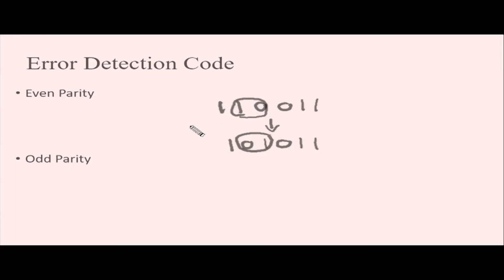This parity is the basic method. To detect two-bit corruption, three bits, or multiple bits, we have some advanced techniques.